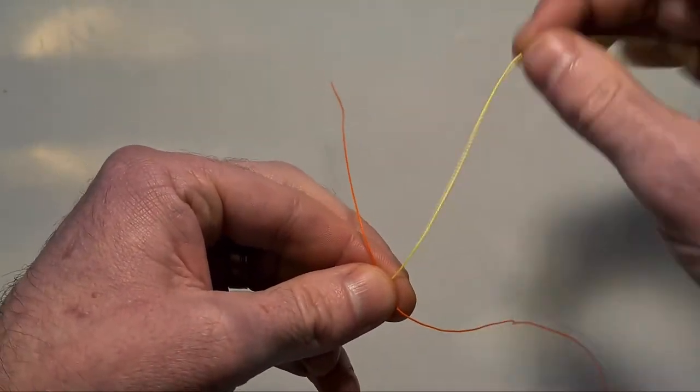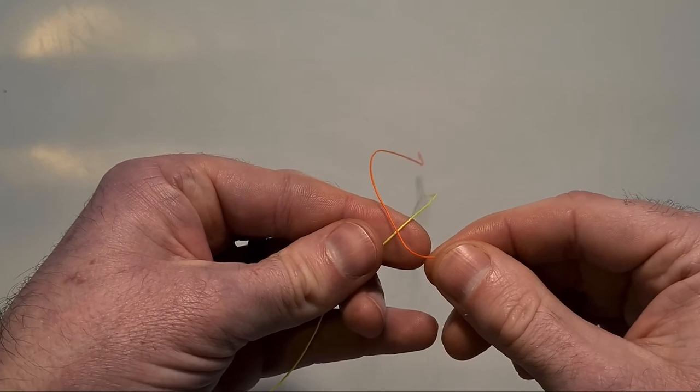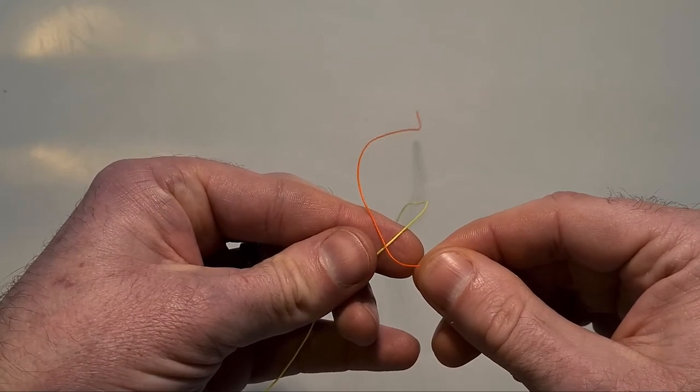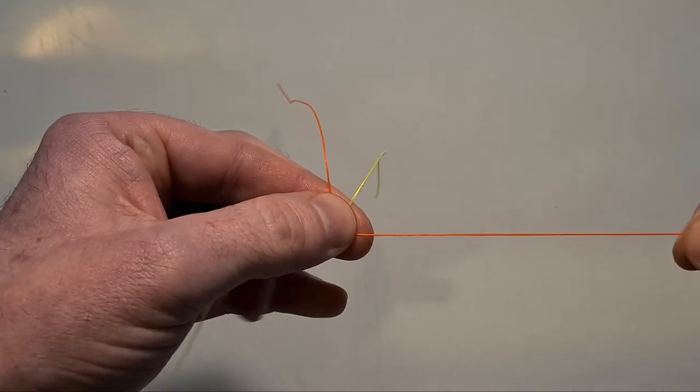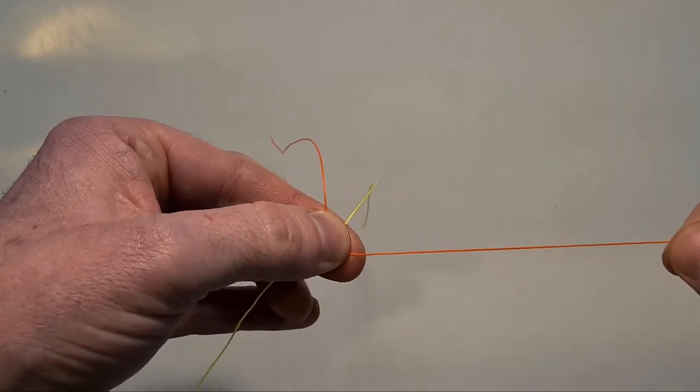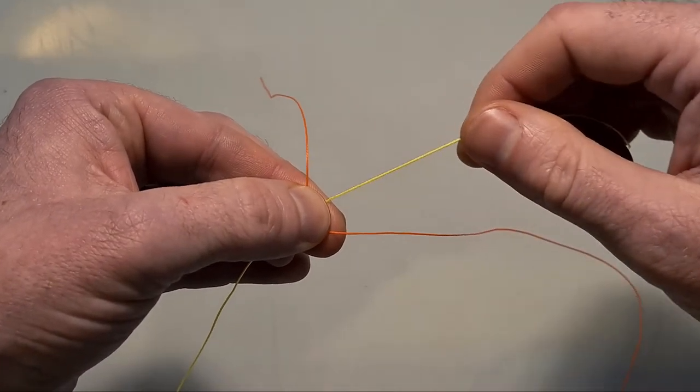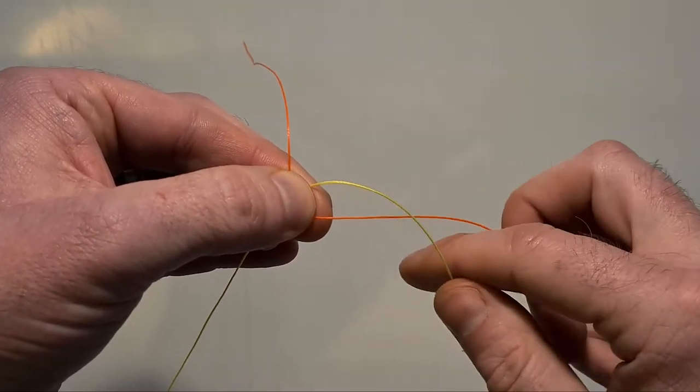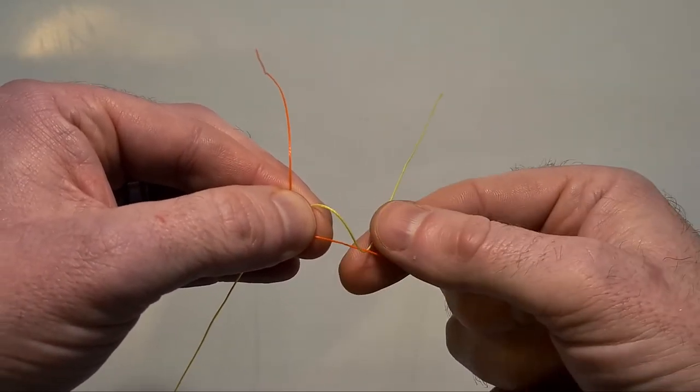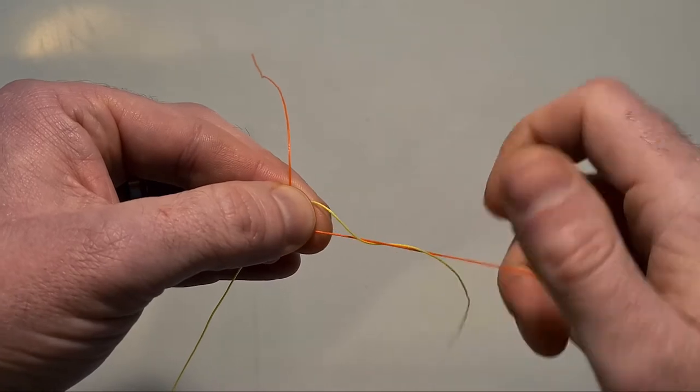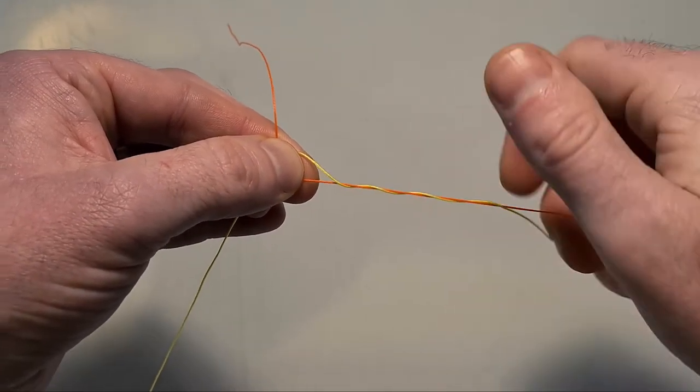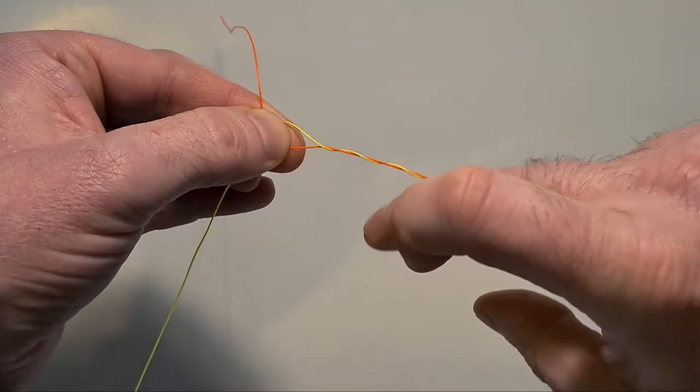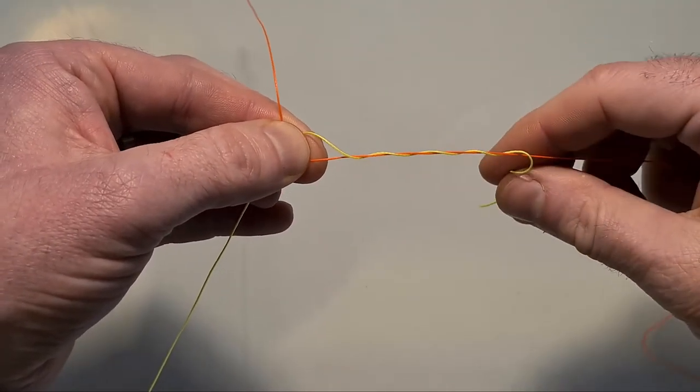Now in this case what we have is the cross has the orange line going over the yellow line over the top. So I'm going to start by using this side and as we're essentially tying two half blood knots on either side, I'm going to start with this one and I'm going to bring this one over and under and wrap it around about five times. So one, two, three, four, and five.